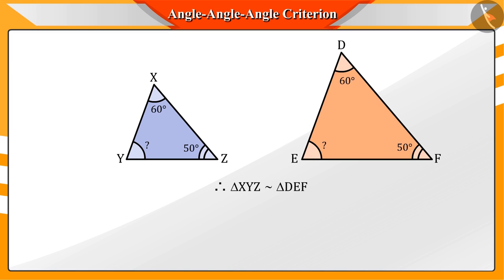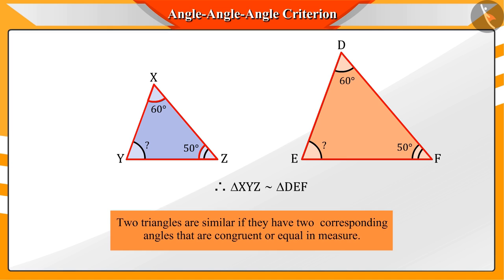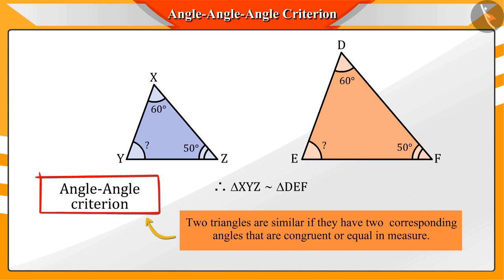Hence, we can conclude that two triangles are similar if they have two corresponding angles that are congruent or equal in measure. We call this the AA criteria for similarity of triangles.